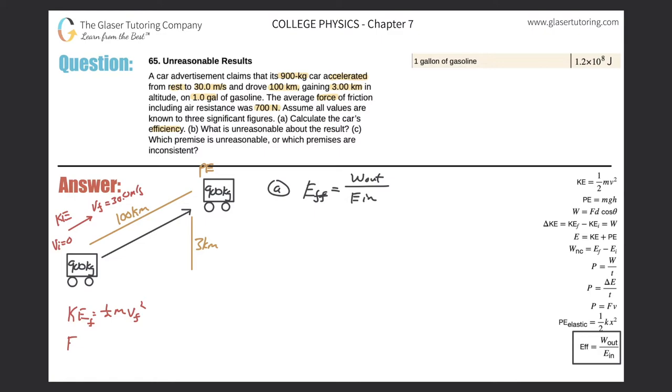So the final kinetic energy would be one half times the mass times the final velocity squared. Actually, you know what? Let me leave everything. I'm going to calculate it all at once. So here's the kinetic energy. We know those variables.